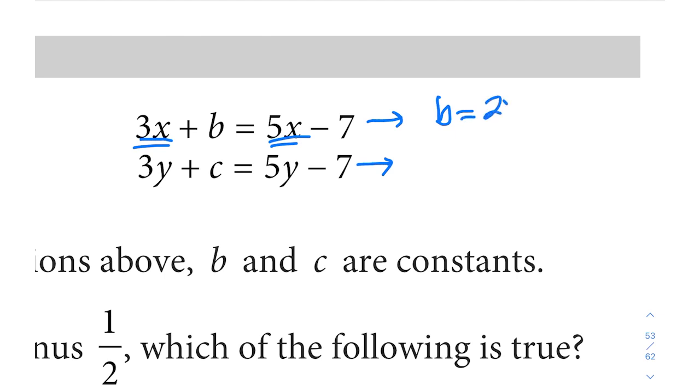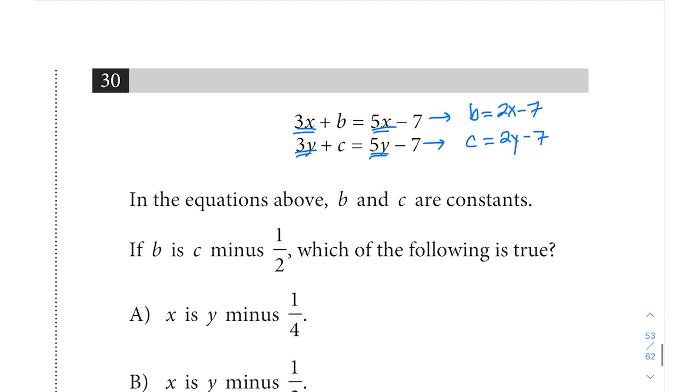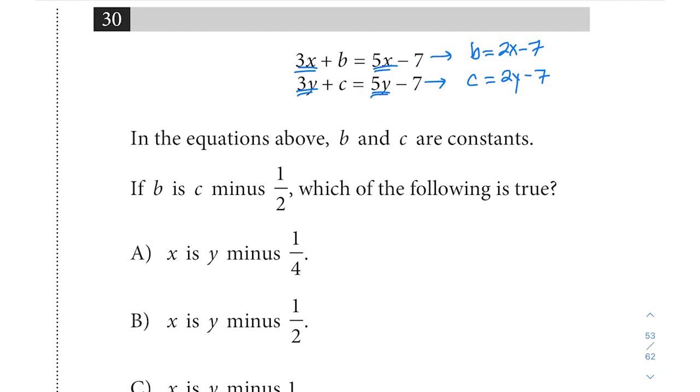If we combine like terms, we subtract 3x from both sides, we get b equals 2x minus 7. We subtract 3y from both sides, we get c equals 2y minus 7. Now this is going to be a little bit more manageable.